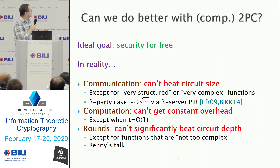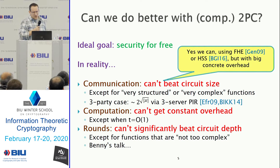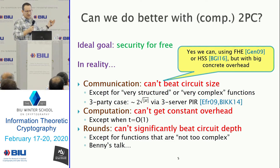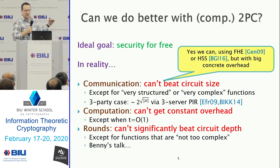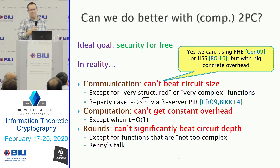Now the question is: can we do better? In the computational setting — the mainstream setting in cryptography — looking at the two-party case, tools like fully homomorphic encryption and homomorphic secret sharing allow us to get below the circuit size barrier. Asymptotically, if you're willing to make standard cryptographic assumptions, we can get communication complexity almost as good as we can expect. However, concretely, information-theoretic protocols will often still do much better for computations that are not too complex. Asymptotically, the computational setting wins.